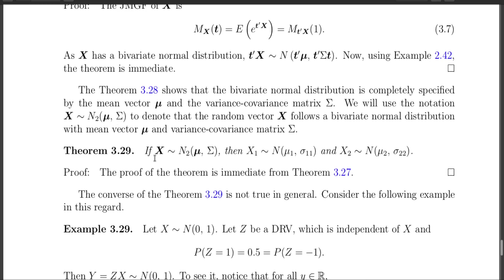The next theorem says that if X is bivariate normal with mean mu and variance-covariance matrix sigma, then X1 is normal with mean mu1 and variance sigma-1-1, and X2 is normal with mean mu2 and variance sigma-2-2. We already know the components are normal; the extra point here is that the parameters of X1's distribution are specifically mu1 and sigma-1-1.